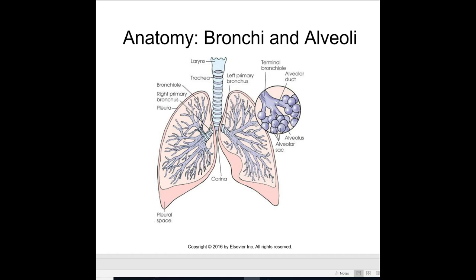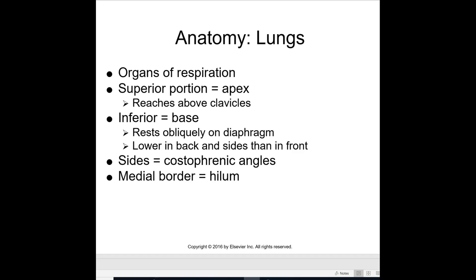Here is a diagram of the bronchi and the alveoli. Anatomy of the lungs: the superior portion is the apex, which reaches above the clavicle. The inferior portion is the base, which rests obliquely on the diaphragm — lower on the back and sides than in the front. The sides form the costophrenic angles, and the medial border is the hilum.